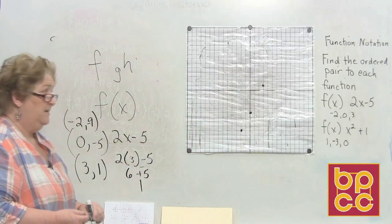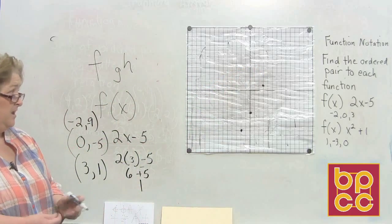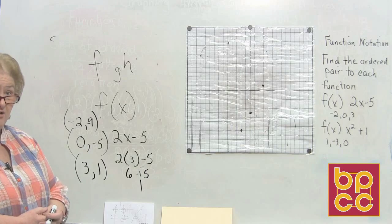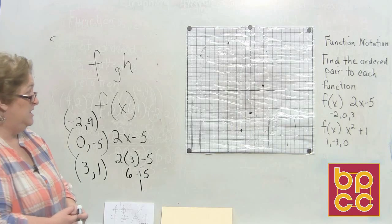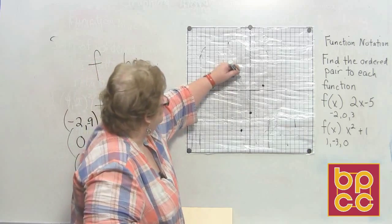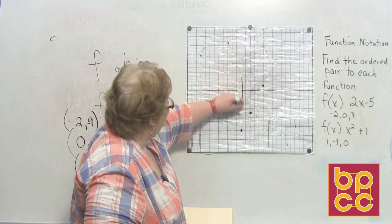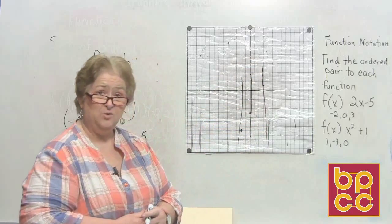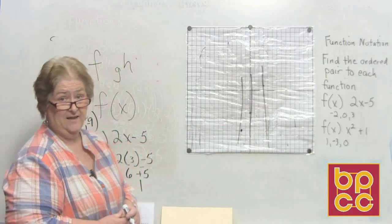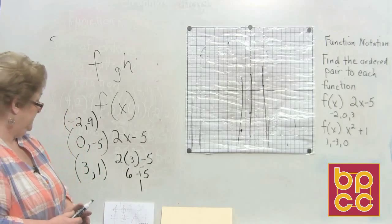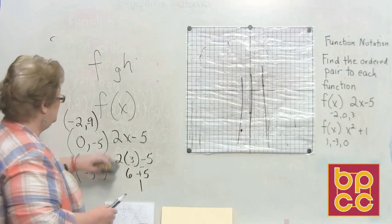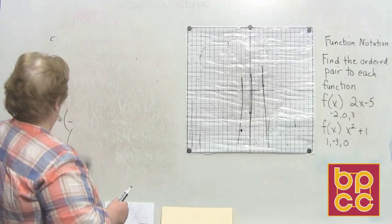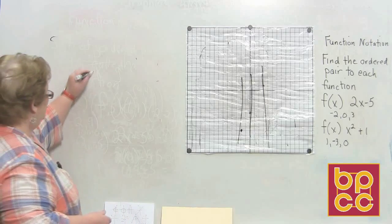Now you can see that I've plotted 3 points using what they gave me, and this shows that I have a function, because no matter what vertical line I go down, I've only used X one time on that vertical line. So that was the function. Let's try one more — let's try X squared plus 1.